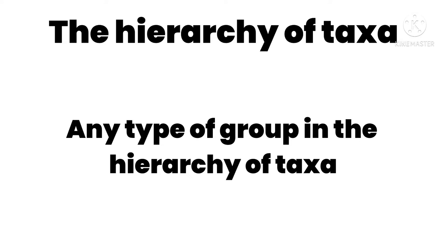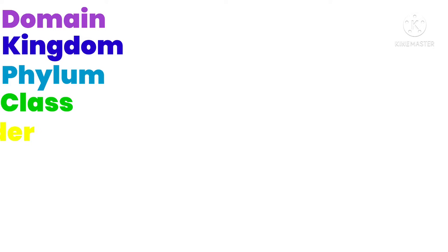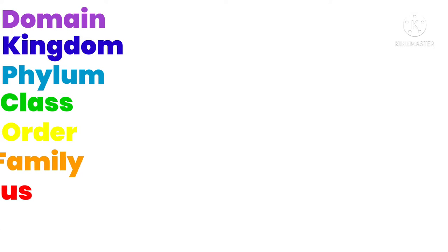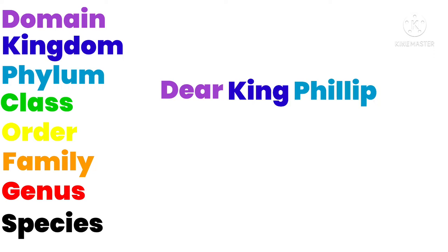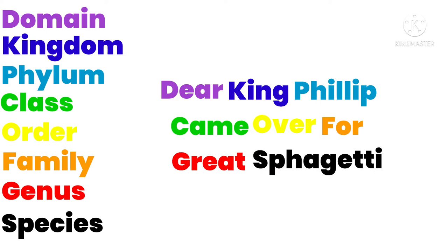There are a few taxons, which are domain, kingdom, phylum, class, order, family, genus, and species. For a mnemonic, it is: Dear King Philip came over for a great spaghetti.